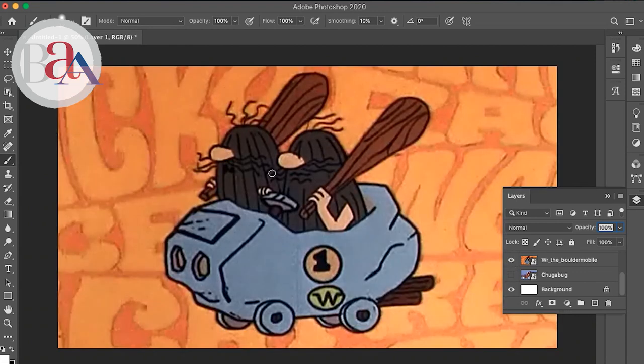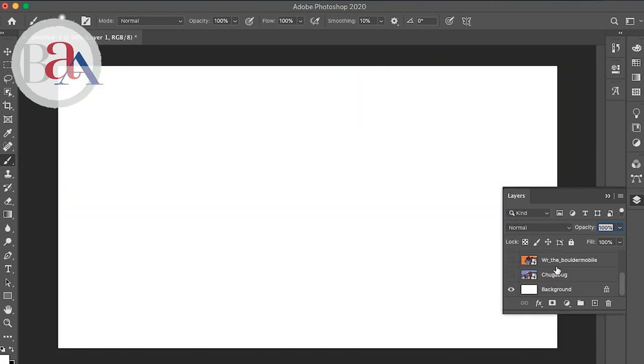Same thing with this. We got these two little cavemen type of people. They got the big clubs and the actual car's made out of a rock. So it's just real stone age. It's real simple and very primitive looking, right? So that theme definitely comes across really strong.